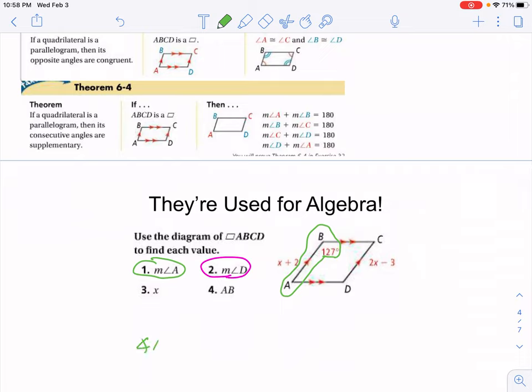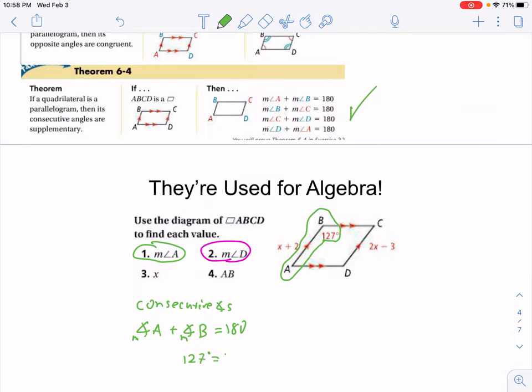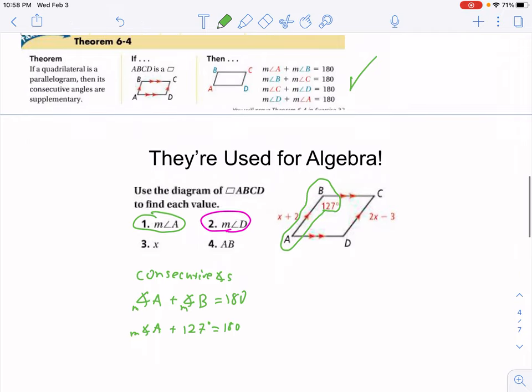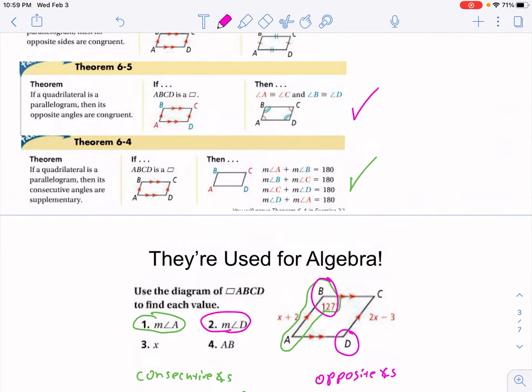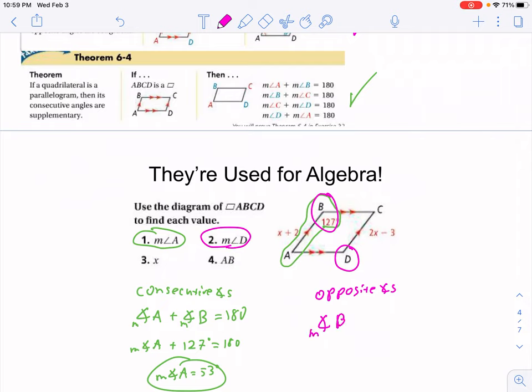To find A, we want to identify that angle A and angle B are consecutive angles. That means that they add up to 180 degrees. Since we know angle B is 127, we can solve for angle A. For angle D, we'll instead observe that D and B are opposite angles. In a parallelogram, opposite angles are equal. So, that means that they are both 127 degrees.